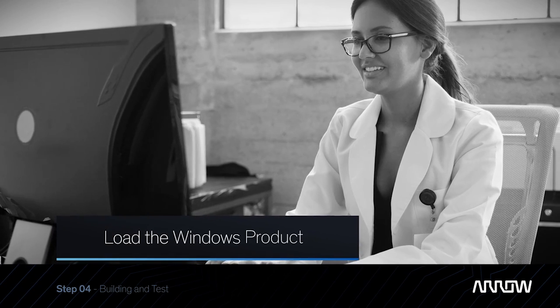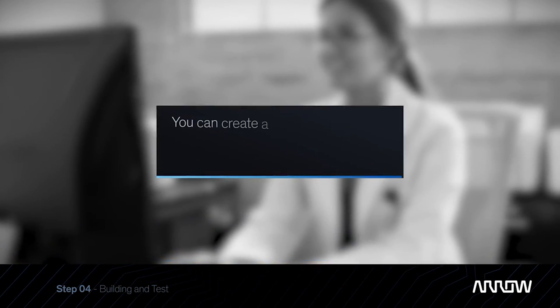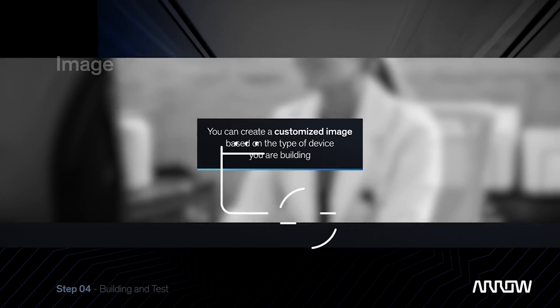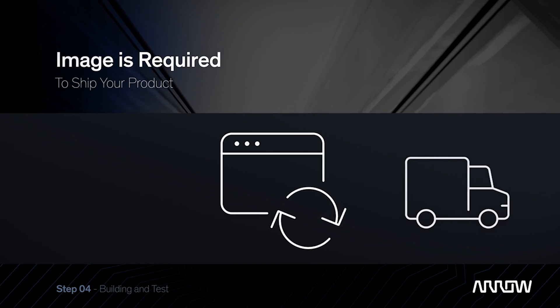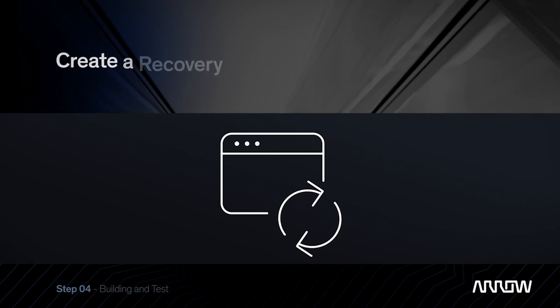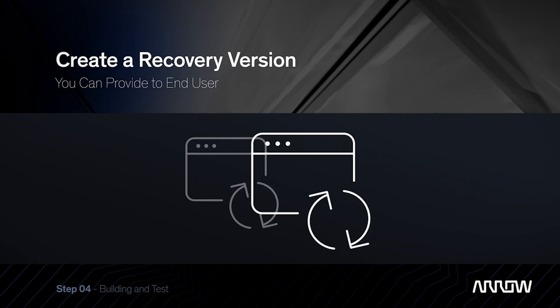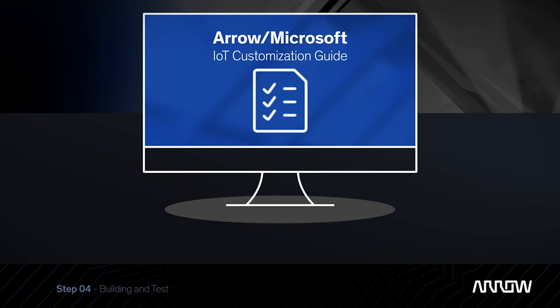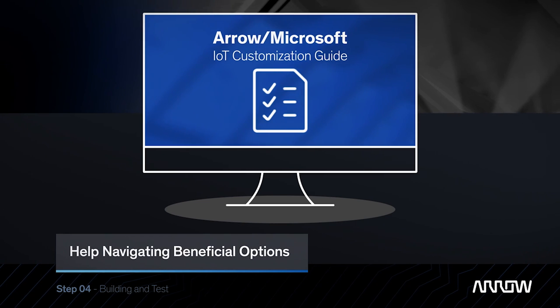Load a test unit with the Windows product. Using the software obtained in Step 2, you will be able to create a customized image based on the type of device you are building. This image is required to ship your product. Test the image and even create a recovery version that you can provide to your end user, if preferred. Request the Aero Microsoft IoT Customization Guide to help navigate the many beneficial options.